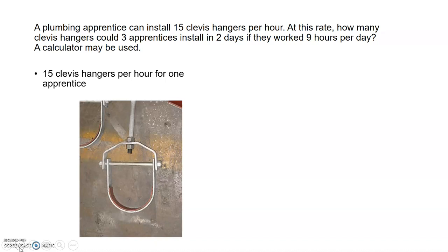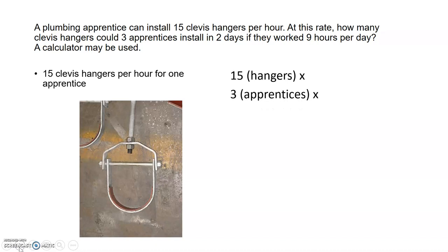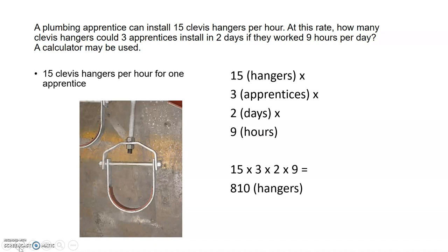So we have 15 clevis hangers per hour for one apprentice, times three apprentices, times two days, times nine hours per day. That gives us 810 hangers. Three apprentices over two days at nine hours per day, with an average install rate of 15 clevis hangers per hour per apprentice, gives us 810 hangers installed over that time.